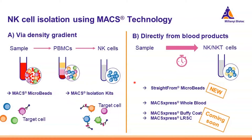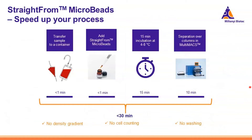You can also start directly from your starting material — from different blood products such as whole blood samples, buffy coat, or leukapheresis products. For this, you can use the new StraightFrom microbeads or the MACSXpress system, also for positive and untouched isolation of your NK cells. The key advantages are that you do not need to perform density gradient centrifugation, you can skip washing and counting steps, meaning you get your cells of interest in around half an hour. You can semi-automate this with the MultiMACS Cell 24 separator to make cell separation even faster and easier.